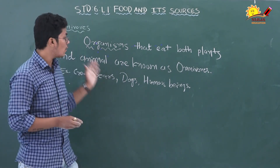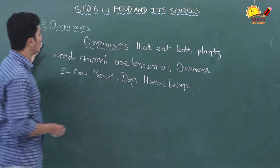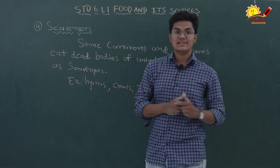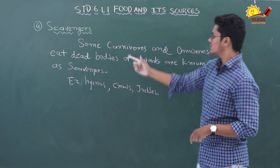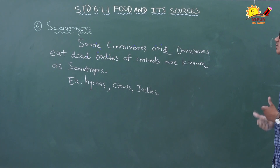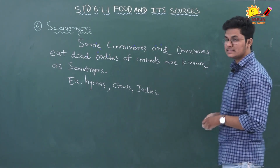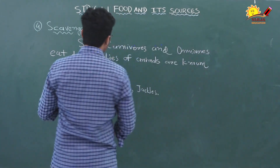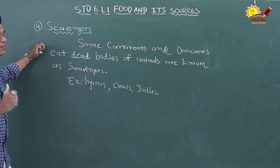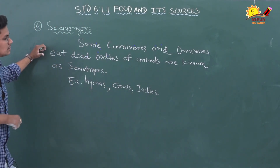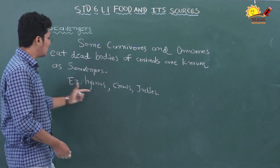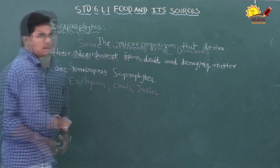The next category is scavengers. Some carnivorous and omnivorous animals eat the dead bodies of animals — these are known as scavengers. They only eat the dead bodies of dead animals. Examples are hyenas, crows, and jackals.